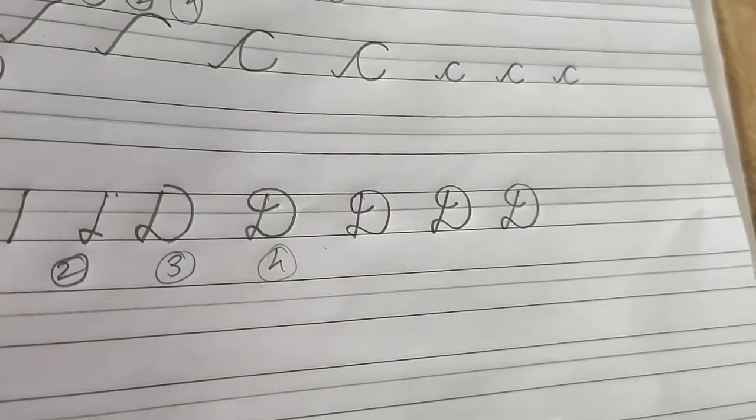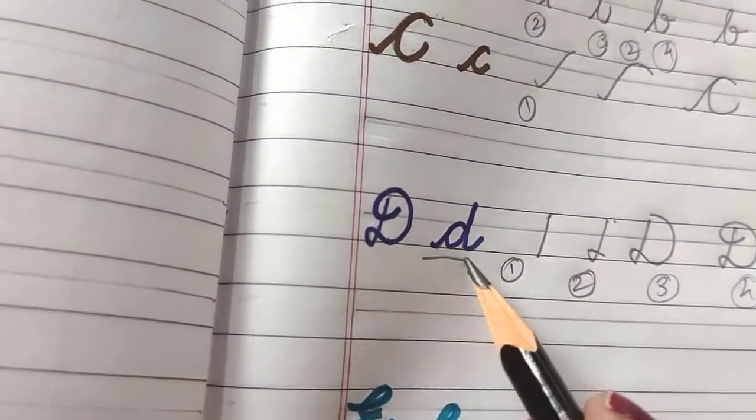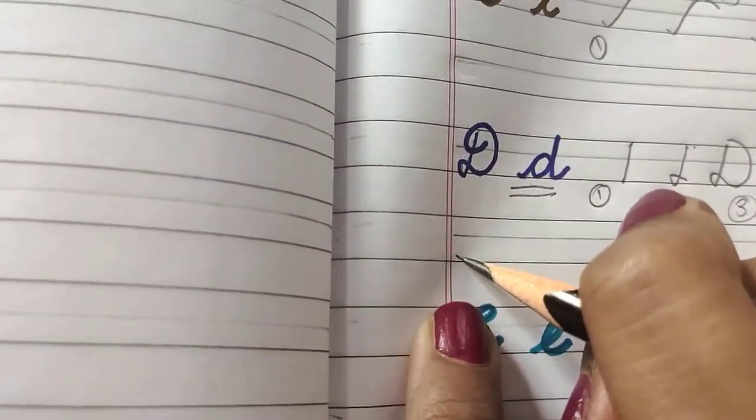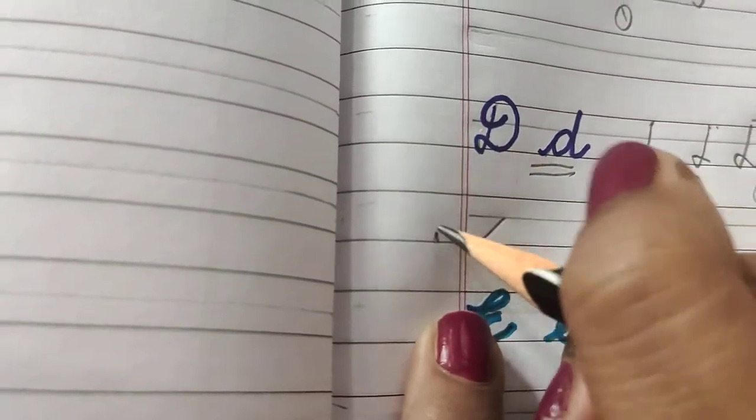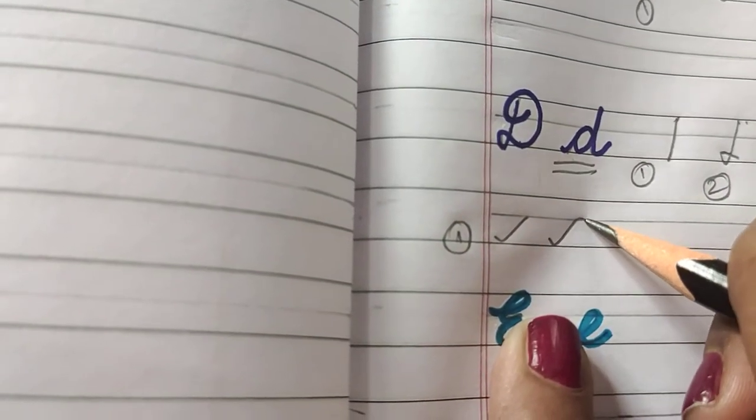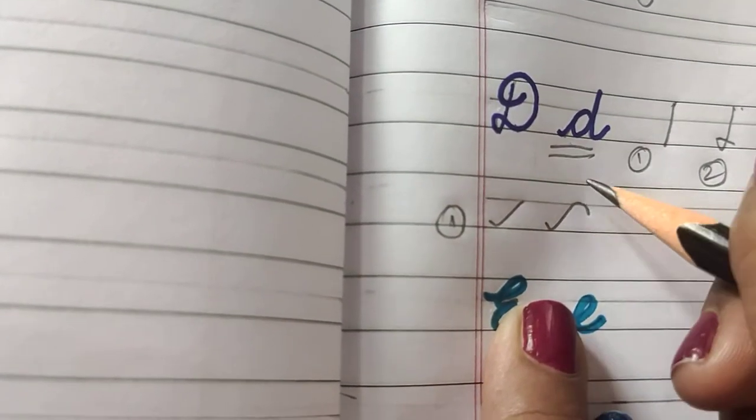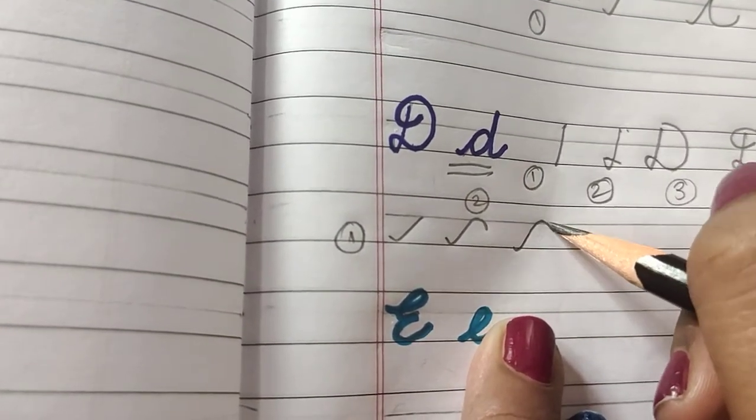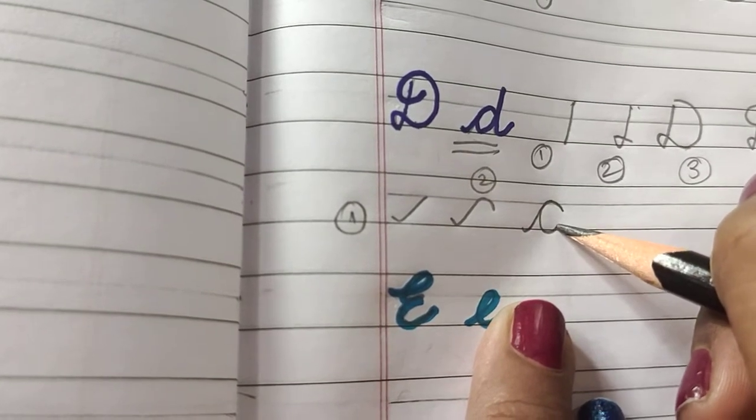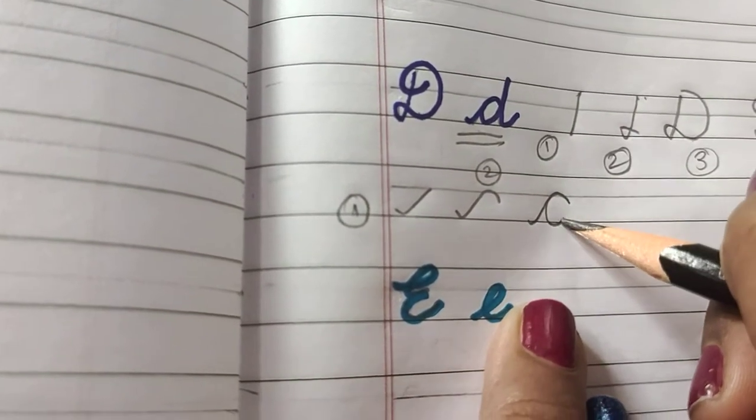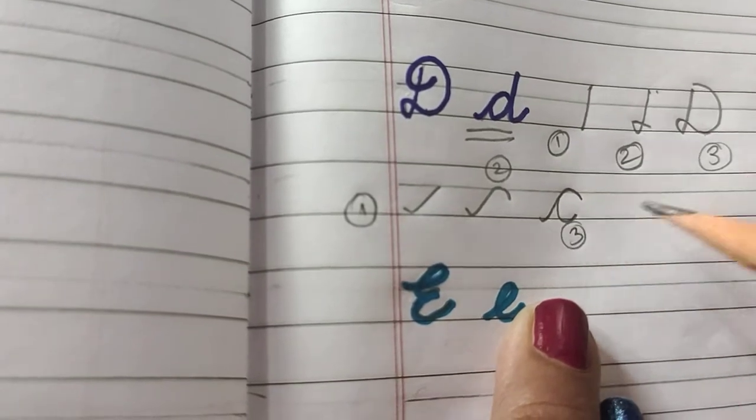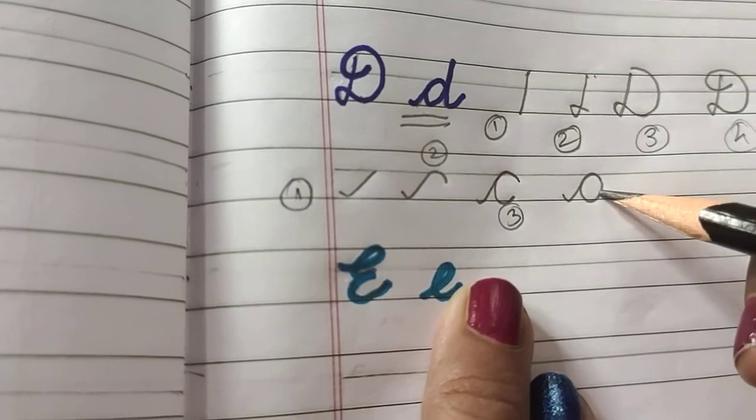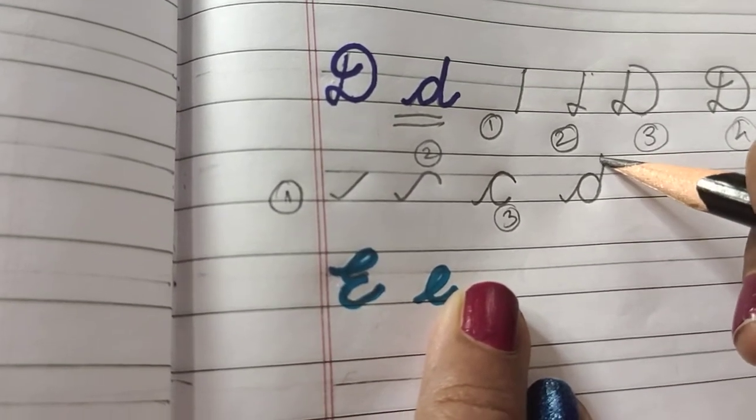So this is your D. Now comes your small d. Again, a tick mark, small tick mark-like structure, curve, then bring it back just like we did for alphabet a. Bring it back, join it to this part, and extend it up.